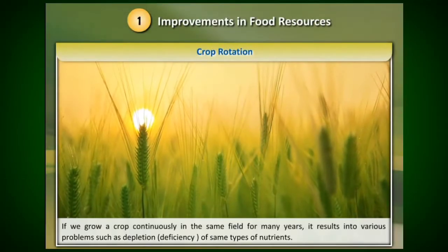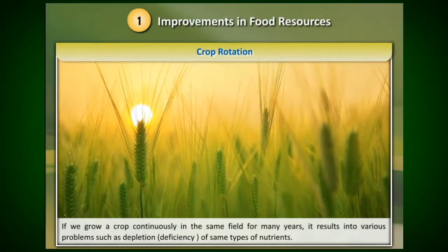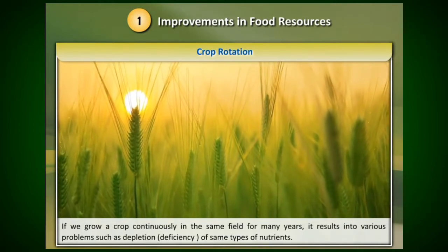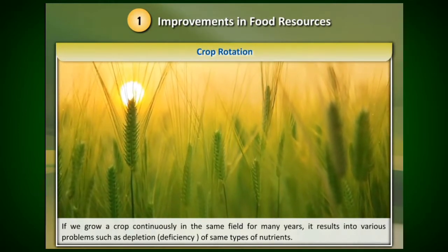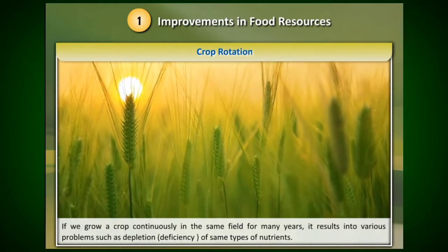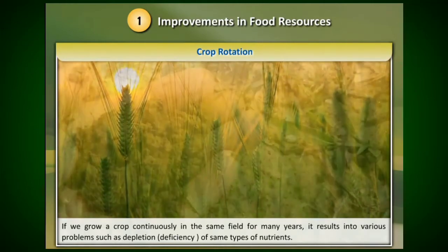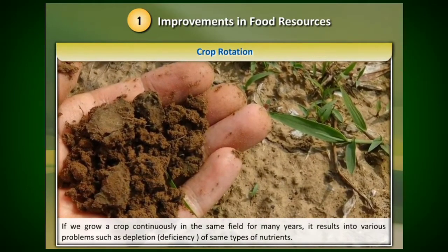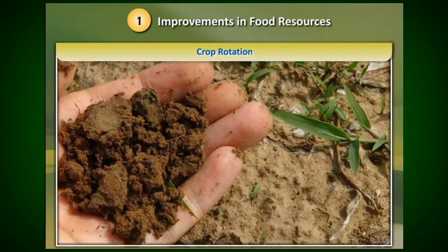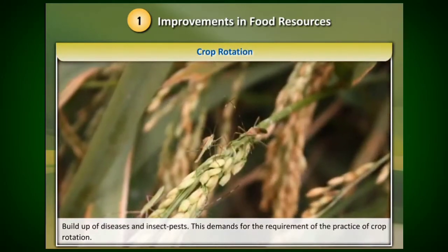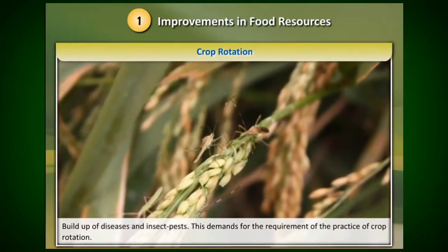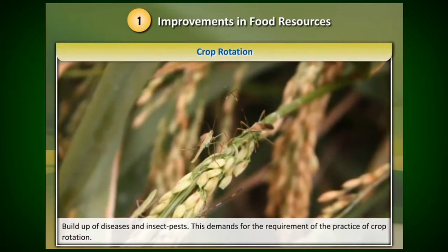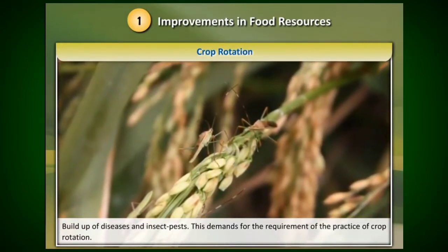Crop rotation. If we grow a crop continuously in the same field for many years, it results in various problems such as depletion and deficiency of the same types of nutrients, and build-up of diseases and insect pests. This demands the practice of crop rotation.